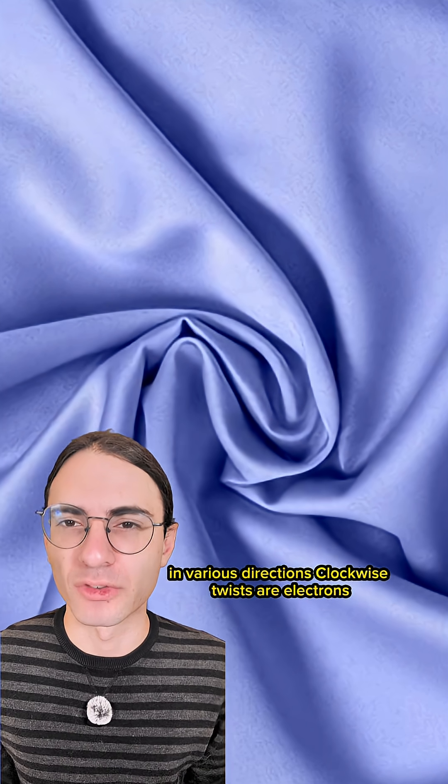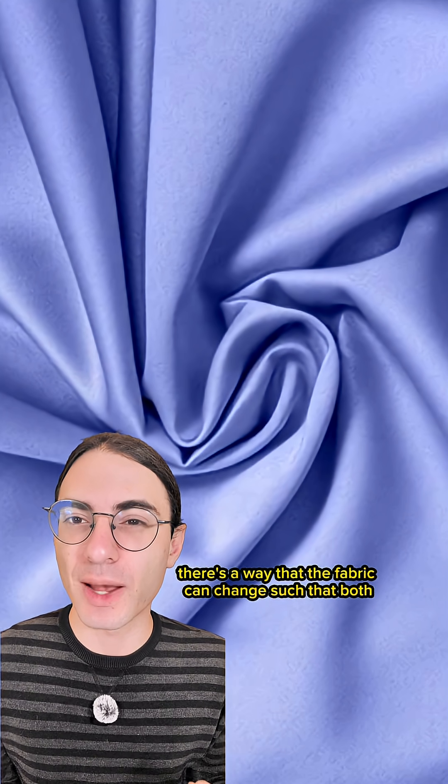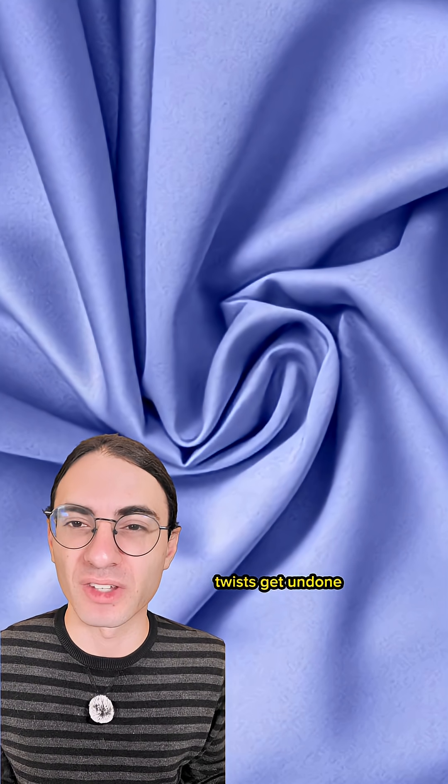Imagine a fabric with bunched up twists in various directions. Clockwise twists are electrons, and counterclockwise twists are positrons. When two opposite twists meet each other, there's a way that the fabric can change such that both twists get undone.